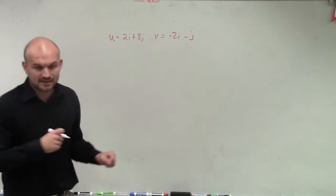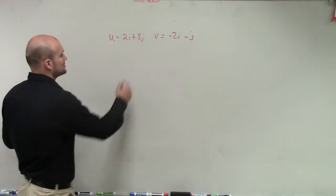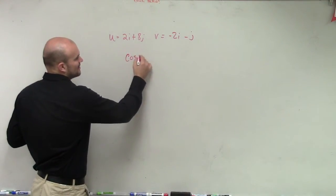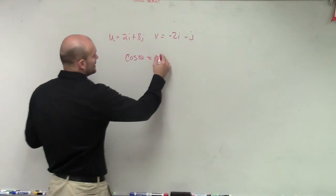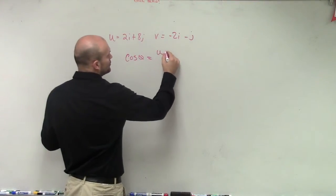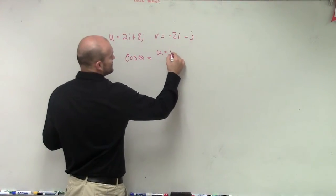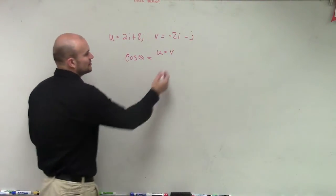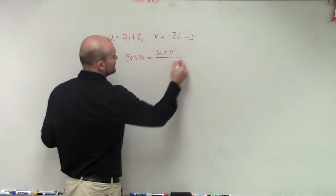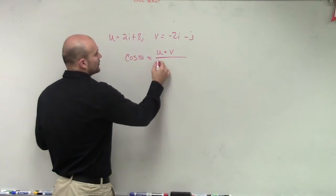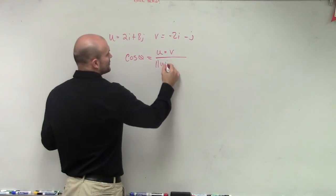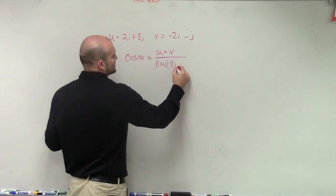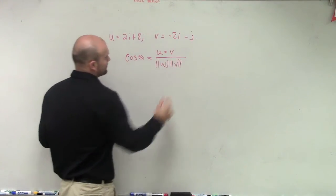The formula for the angle between two vectors is: the cosine of theta equals u dot v — meaning the dot product of u and v — over the magnitude of u times the magnitude of v.